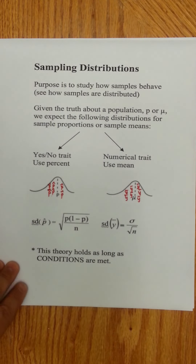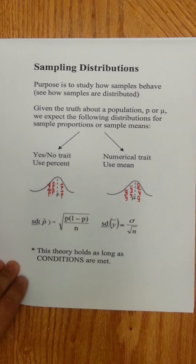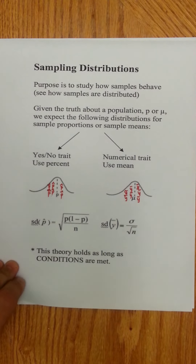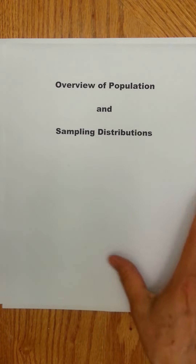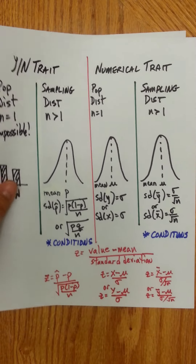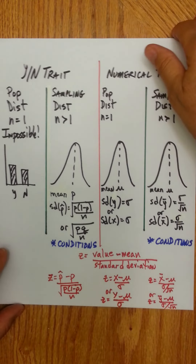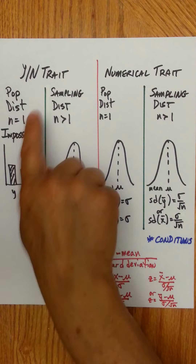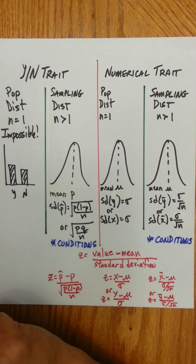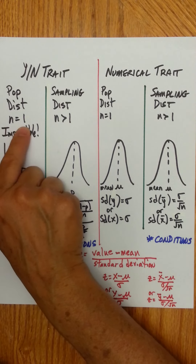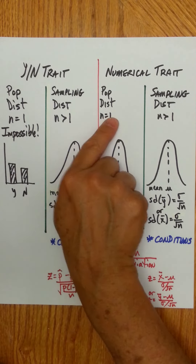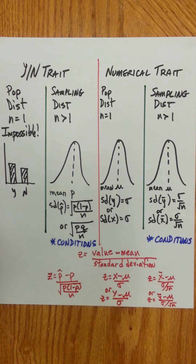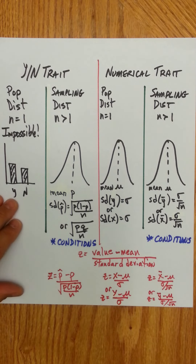Now let's take a broader comparison. I want to look at population and sampling distributions together. I've made a comparative chart here. For a yes-no trait, it's impossible to have a population distribution. A population distribution is always when your sample size is one — you're taking values one at a time — and your values here are yes-nos.